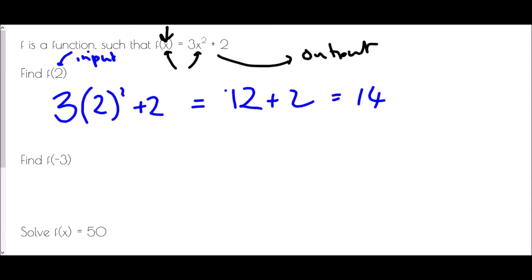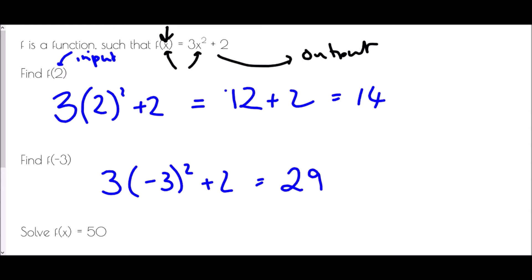Find f of minus 3. Well, negative 3 is my input, so I'm going to input it into the formula. So it's 3 times negative 3 squared, then plus 2. Negative 3 squared — that's negative 3 times negative 3 which is 9. Times 3 is 27, plus 2 is 29.